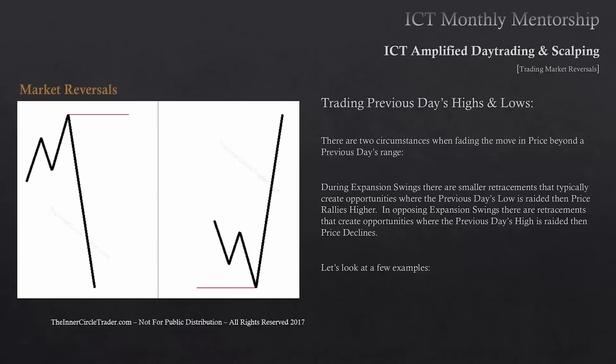There are two circumstances when looking to fade price beyond the previous day's range — and in my opinion this is the crown jewel of this teaching. During expansion swings, there are smaller retracements that typically create opportunities where the previous day's low is raided and then price rallies higher. In opposing expansion swings, retracements create opportunities where the previous day's high is raided and then price declines. It's essentially the concept of turtle soup — a false break above an old high or false break below an old low — but it's one step further than that.